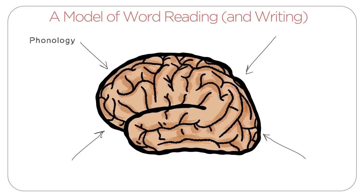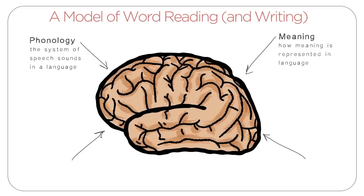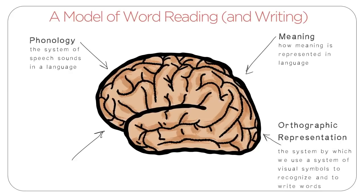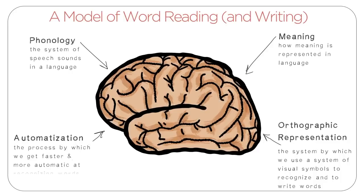The first is phonology, or the system of speech sounds in a language. The second is meaning — how meaning is represented in language. The third is orthographic representation, the system by which we use visual symbols to recognize and write words. The final skill is automatization, the process by which we get faster and more automatic at recognizing words. In addition, we also need visual motor skills in order to write or type, which is important for dictation and spelling only.